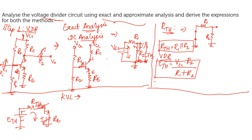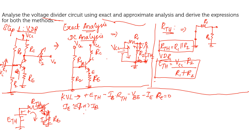Applying KVL across the loop: plus ETH, minus IB into RTH, minus VBE, minus IE into RE equals zero. Since IE is approximately equal to (beta + 1) into IB, substituting gives: ETH minus IB into RTH minus (beta + 1) into IB into RE minus VBE equals zero.